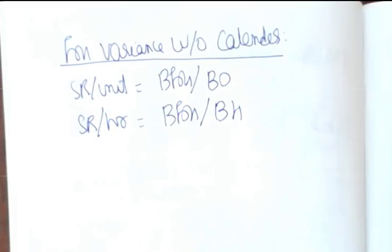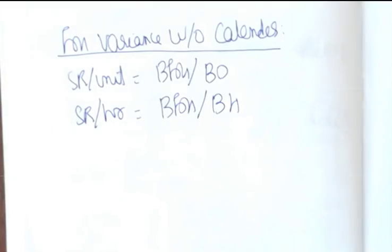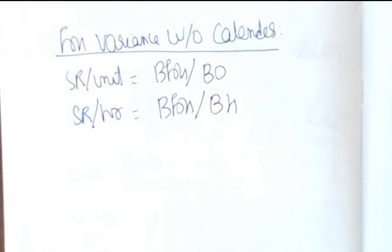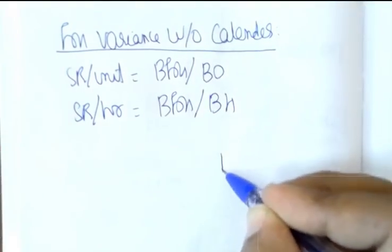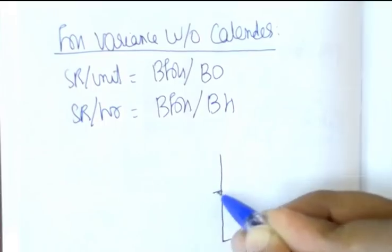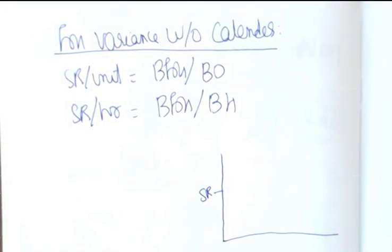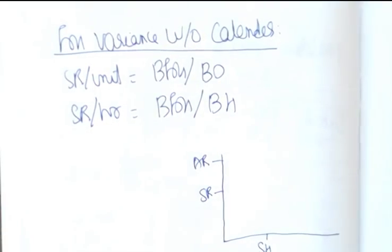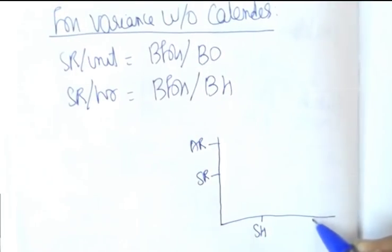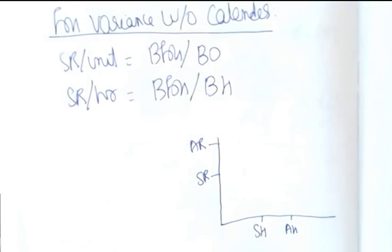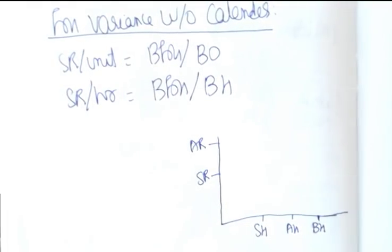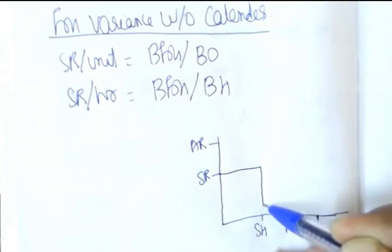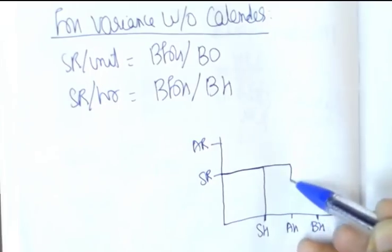The only difference between variable overhead, material, labor and fixed overhead is that those expenses would practically change if output comes down or goes up, whereas fixed overhead is expected to remain constant. So there will be some changes in the chart. The computation table for fixed overhead without calendar is: SR × SH, SR × AH, SR × BH, and actual fixed overhead.